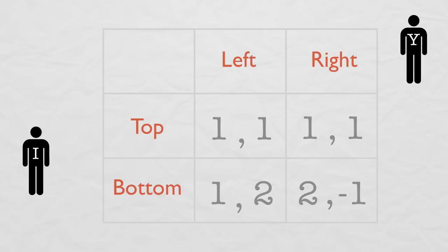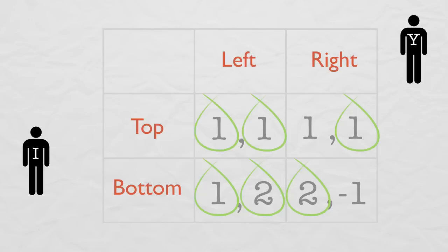Top is a best response to left, and so is bottom. Bottom is a best response to right. Left and right are both best responses to top, and left is a best response to bottom. So top left and bottom left are both Nash Equilibria.